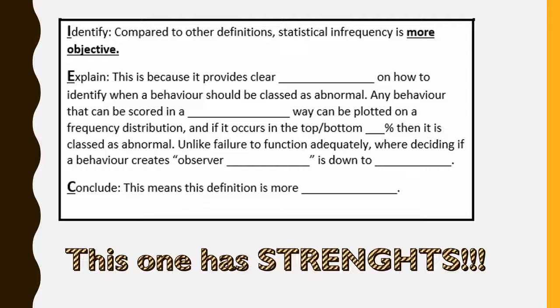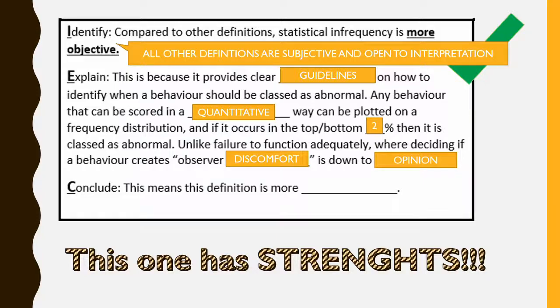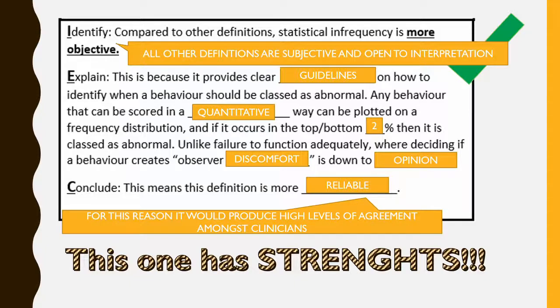Compared to other definitions, statistical infrequency is more objective. This is because it provides clear guidelines on how to identify when a behavior should be classed as abnormal. Any behavior that can be scored in a quantitative way can be plotted on a frequency distribution, and if it occurs in the top or bottom 2%, then it is classed as abnormal. Unlike failure to function adequately, where deciding if a behavior creates observer discomfort is totally down to opinion. This means this definition is way more reliable, and for this reason, clinicians tend to prefer it because it will produce high levels of agreement between psychiatrists.